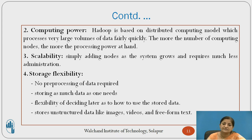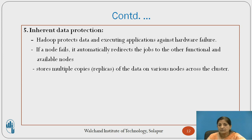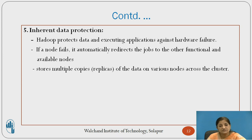Scalability — it simply adds nodes as the system grows and requires much less administration. Storage flexibility — unlike traditional RDBMS or data warehouses, no pre-processing of data is required. It can store as much data as needed and provides the flexibility of deciding later how to use the stored data. It stores unstructured data like images, videos, and freeform text. It also provides inherent data protection — Hadoop protects data and executing applications against hardware failure. If one node fails, it automatically redirects the job to other functional and available nodes. It uses a replication strategy to increase the availability of data, storing multiple copies of data on various nodes within the cluster as well as across clusters.